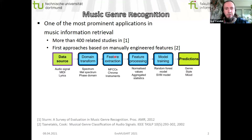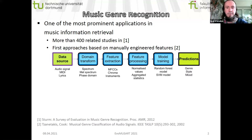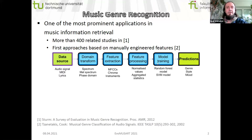Then we extract features like chroma, mel-frequency cepstral coefficients, and timbral descriptors, including instruments. We process these features — for example, normalizing them or aggregating statistics along classification windows. Then we classify those windows using shallow methods like random forest or support vector machines.